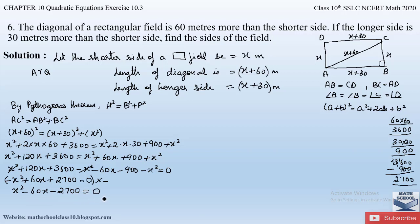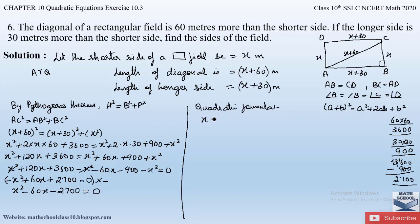For this quadratic equation we can apply any of the three methods: factorization, completing the square, or the quadratic formula. Here let us apply the quadratic formula: x = (−b ± √(b² − 4ac)) / 2a.